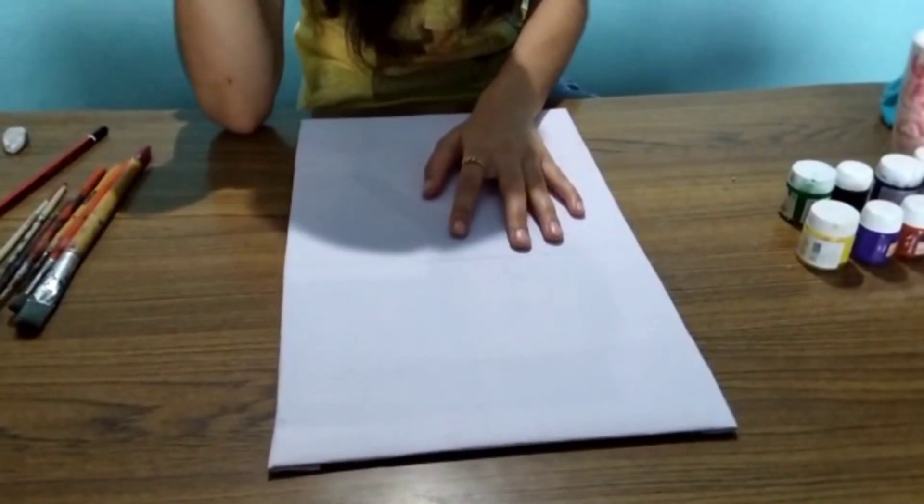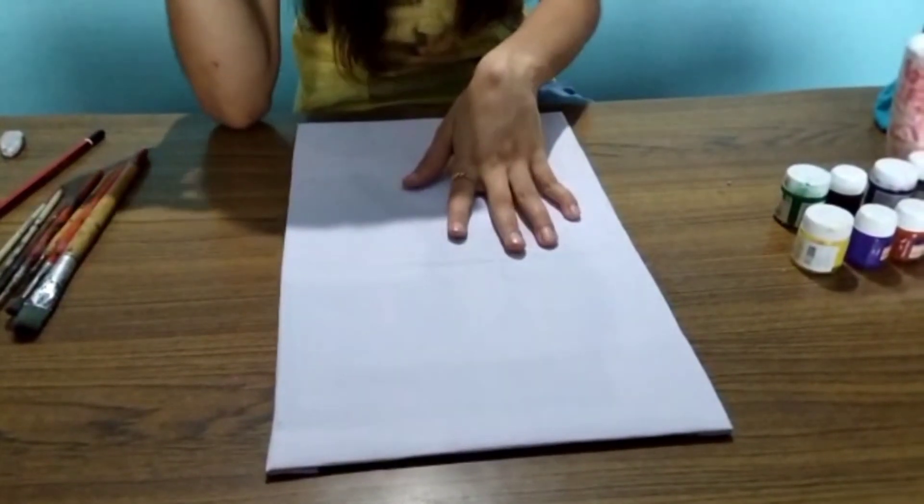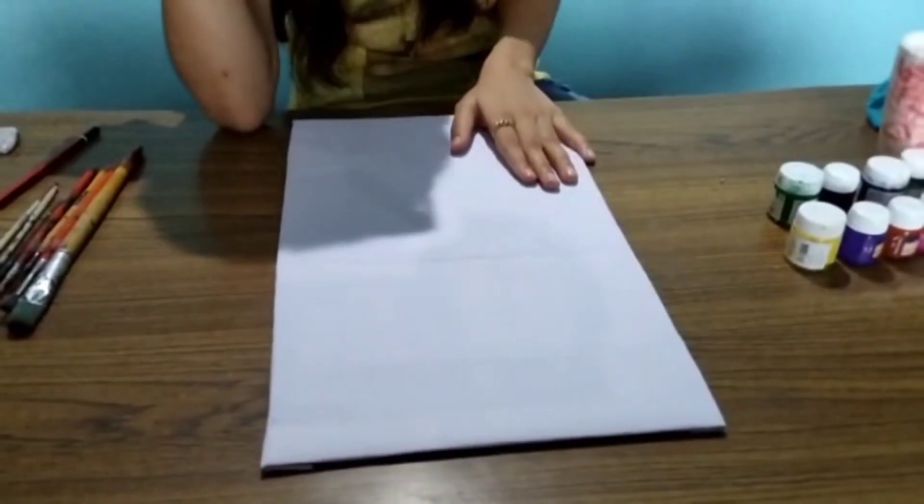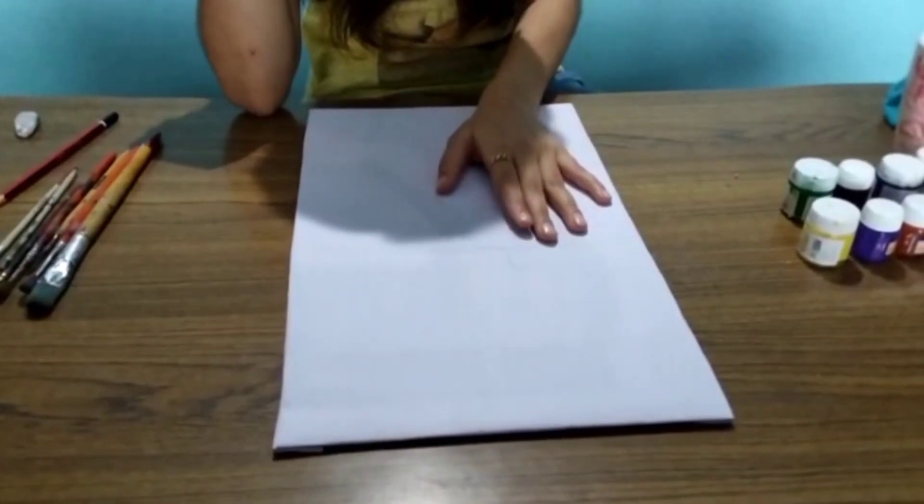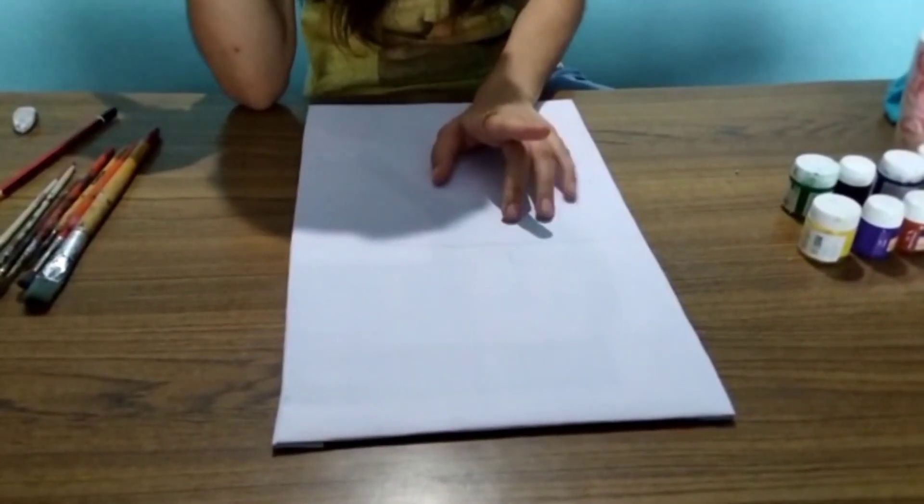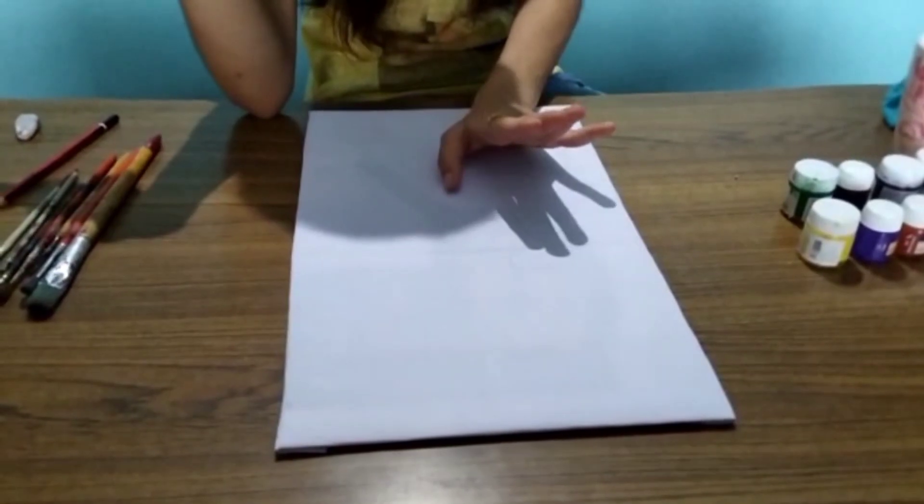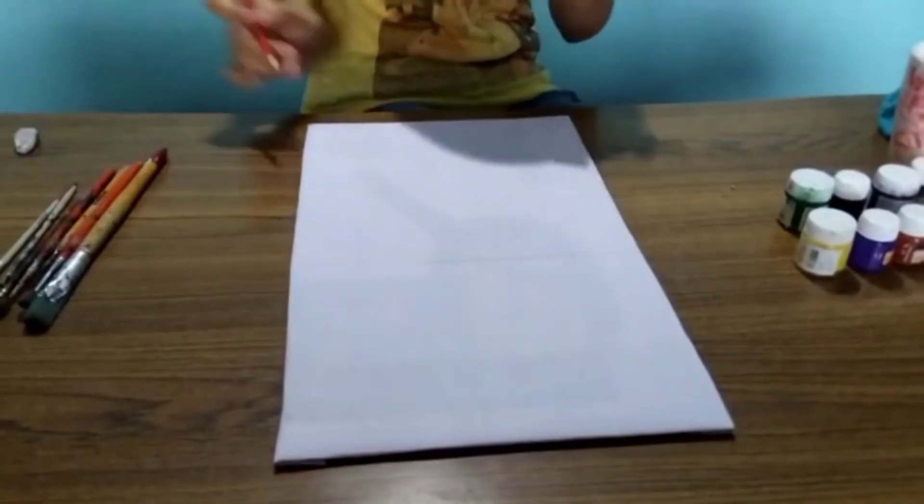We are starting our painting. I have made homemade canvas. You can also take a normal paper and readymade canvas. First of all we are going to draw an outline. Let's get started.